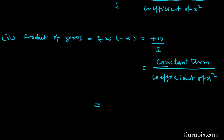Now we find the product of zeros: (−2) × (−5) = +10. We can write this as 10/1, which equals the constant term / coefficient of x². So the product of zeros equals the constant term / coefficient of x². Hence both relationships are verified. This is the solution of the given example. Thank you.